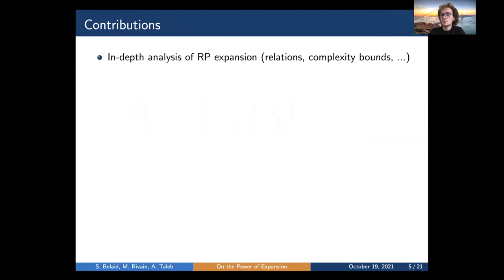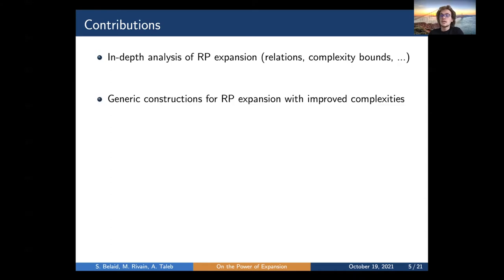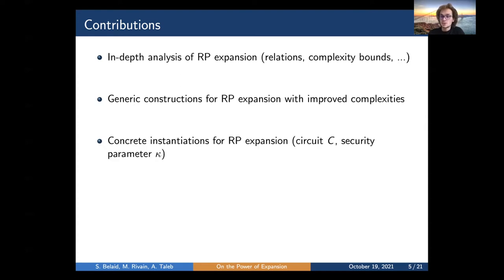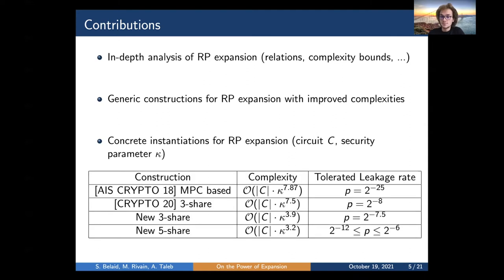In this work, we dive deeper into the RP expansion strategy and provide a detailed analysis with tighter complexity bounds and relations to other well-known security notions. We also introduce generic constructions with improved complexities usable for the expansion strategy for any number of shares. A comparison table shows the complexity between the original MPC-based work, the previous Crypto work, and our new three-share and five-share constructions, considerably reducing the exponent in the complexity expression while tolerating slightly better leakage probabilities.